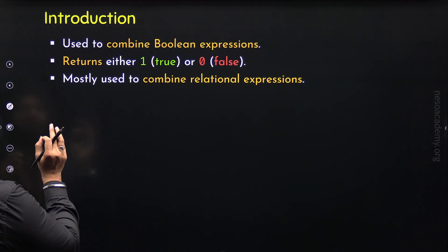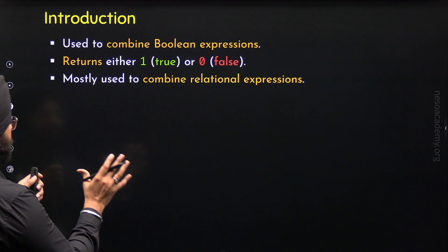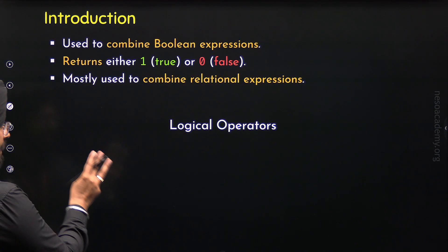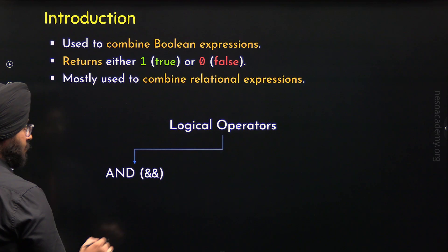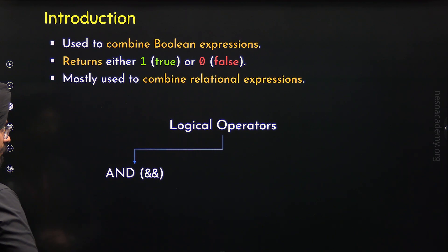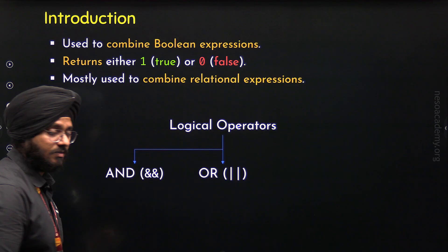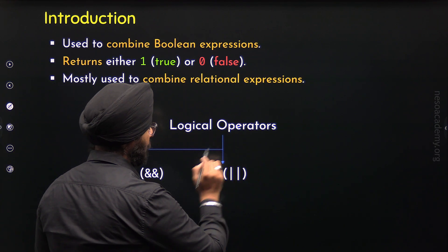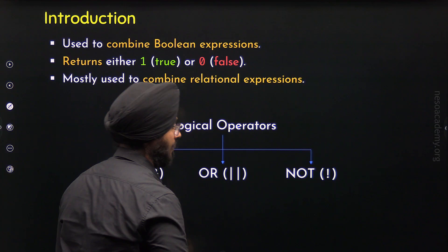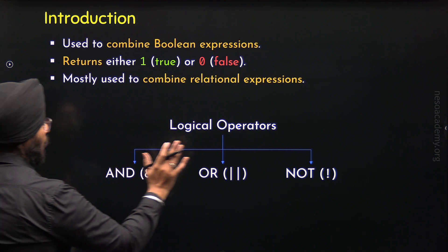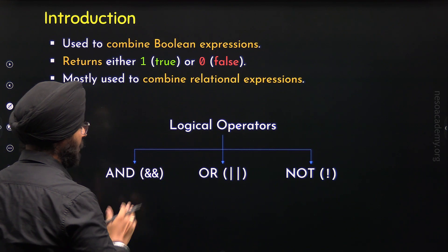Now let's see what are the different types of logical operators we have in C++. There are a total of 3 logical operators. The first one is the logical AND operator, represented by two ampersand symbols. The second one is the logical OR operator, represented by two pipe symbols. And the third one is the logical NOT operator, represented by a single exclamation mark. We will study them one by one in the subsequent topics.